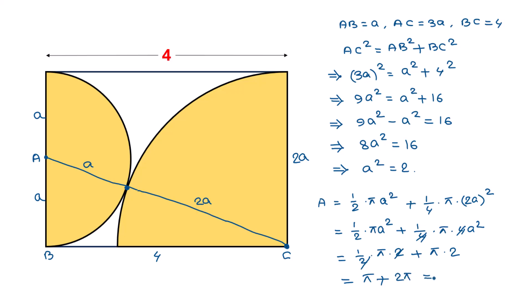So the area of the yellow section is 3π. This is the solution to our given problem. If you like this video, please subscribe to my channel. Thanks for watching.